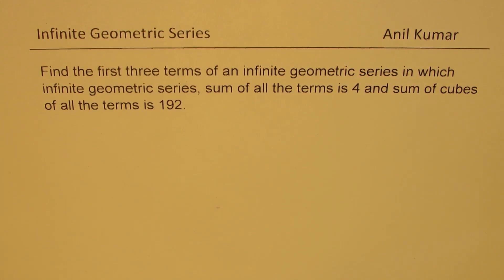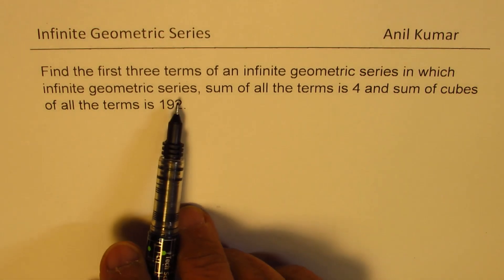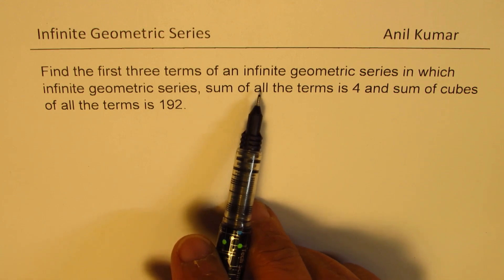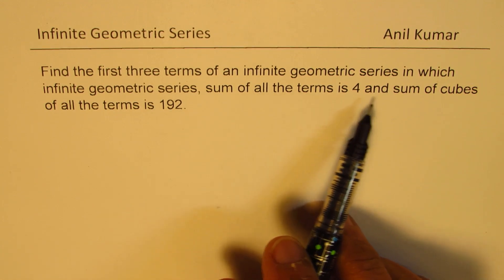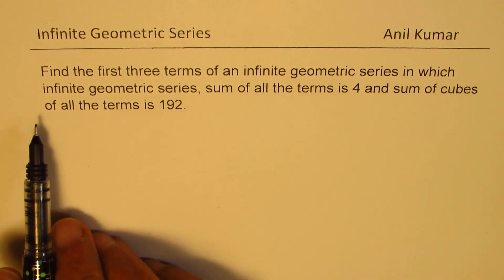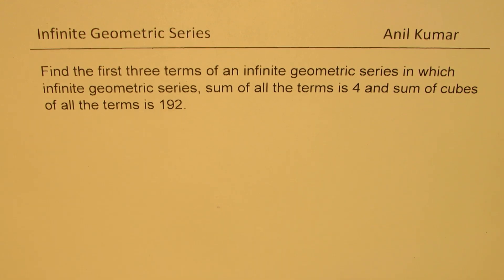Anil Kumar, welcome to the excellent question on geometric series. Find the first three terms of an infinite geometric series in which the sum of all the terms is 4 and the sum of cubes of all the terms is 192.